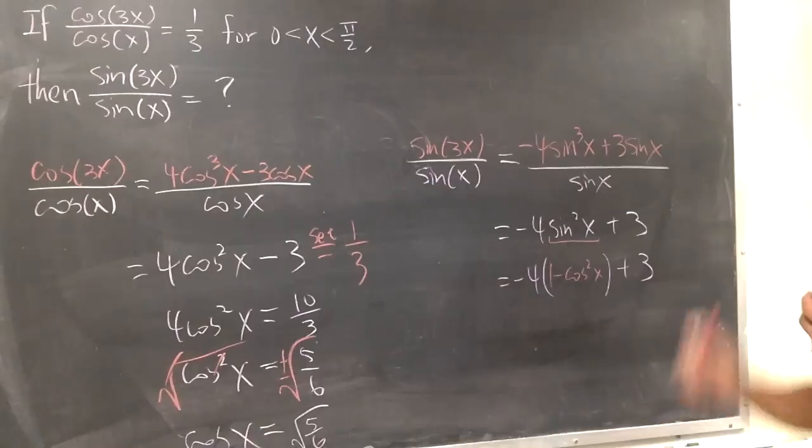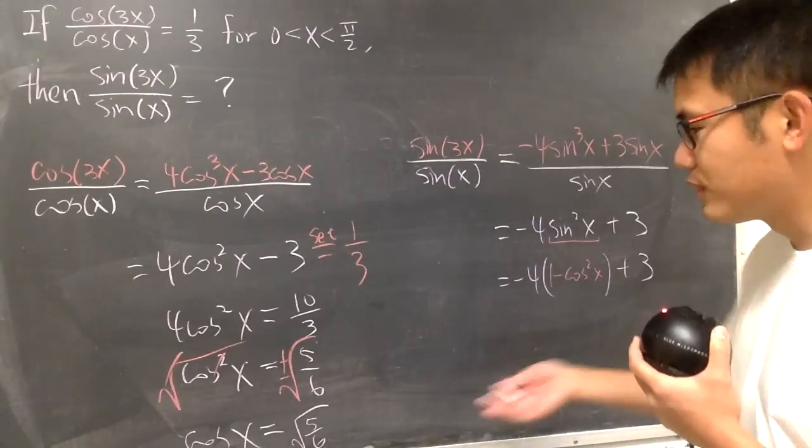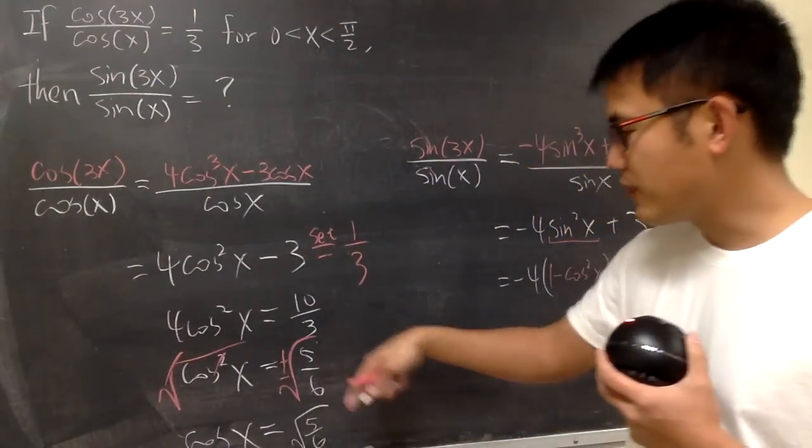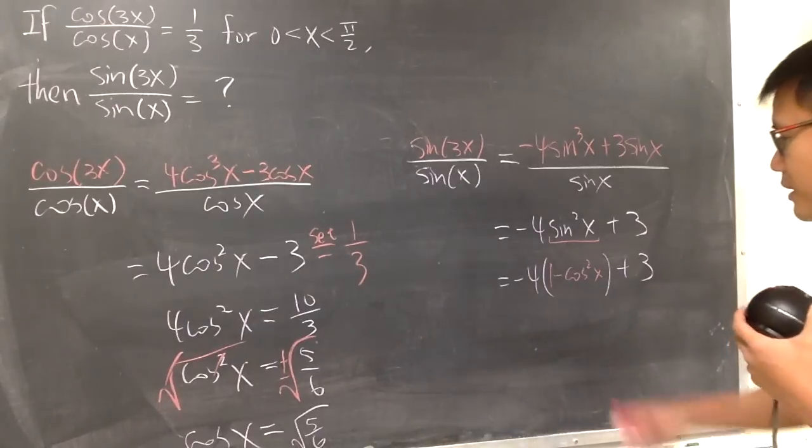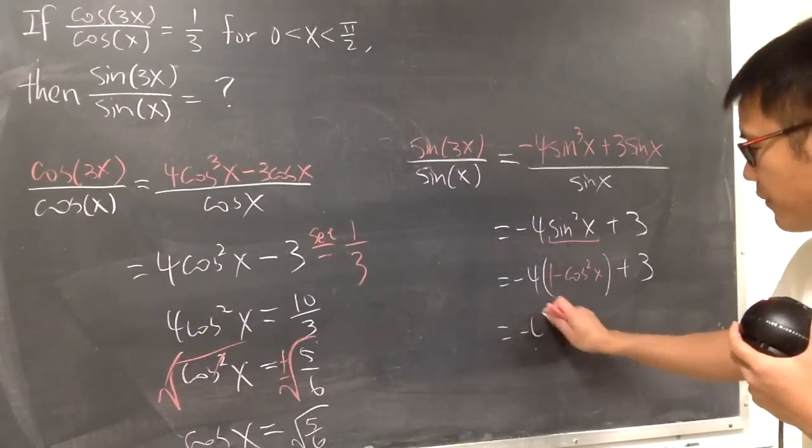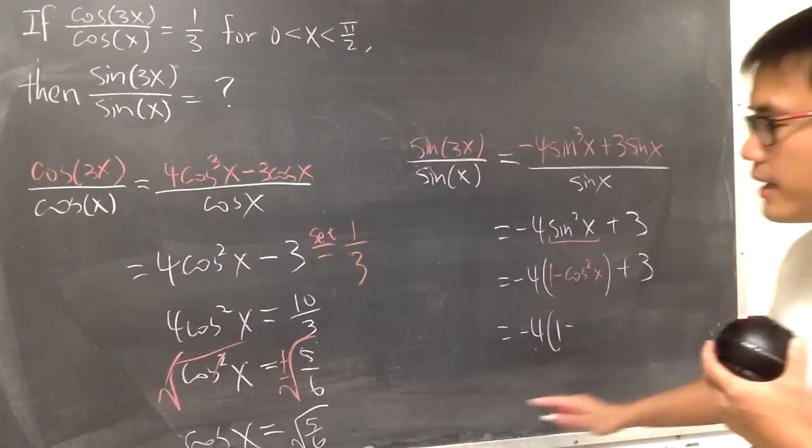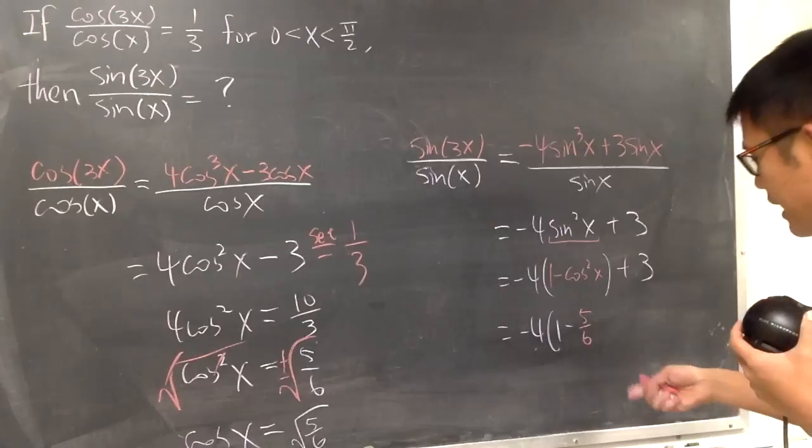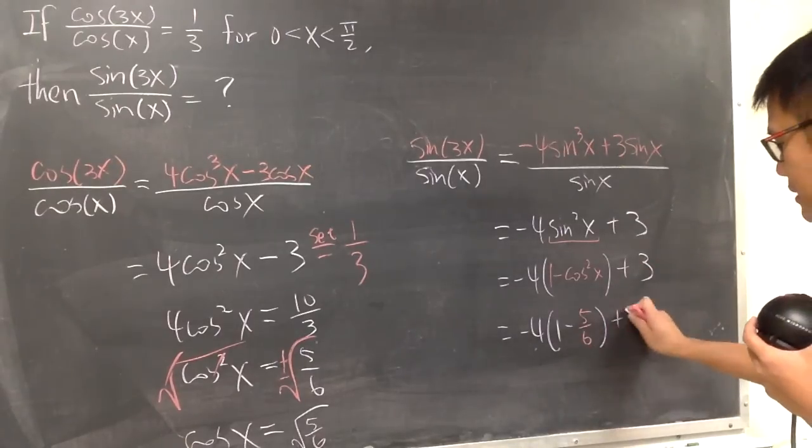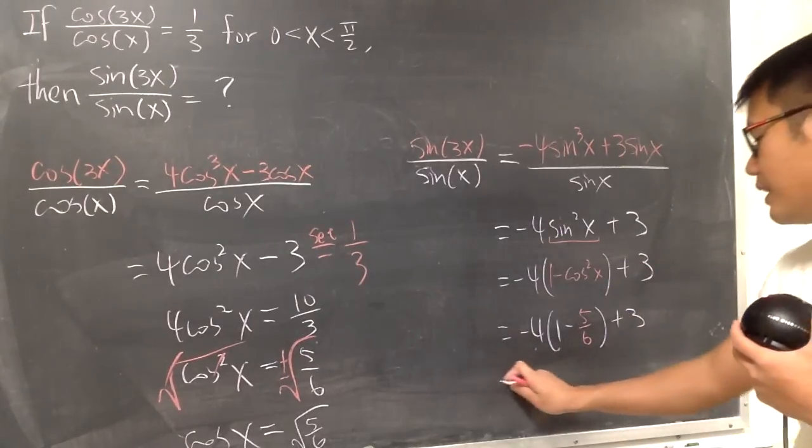And then you add the 3 after that. But I guess I didn't have to take the square root earlier, because cos²x is equal to 5/6. So this right here is -4 times (1 - 5/6) and then of course you can say this is plus 3 after that.